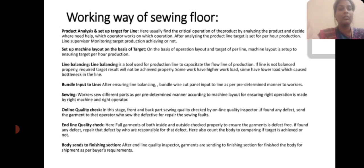Sewing: different parts are sewn as per the determined manner according to the machine layout. To ensure the right operation, it is performed by the right machine and the right operator. Online quality check: at this stage, the front and back parts' sewing quality is checked by online quality inspection. If any defects are found, the garment is sent to the operator who caused the defect to repair the sewing fault.